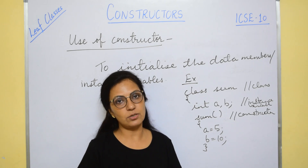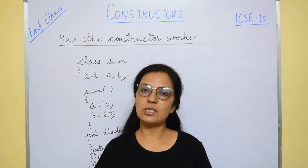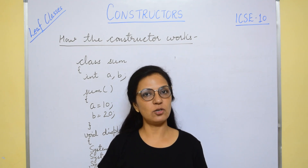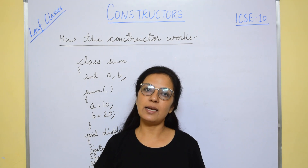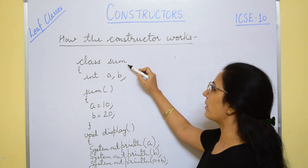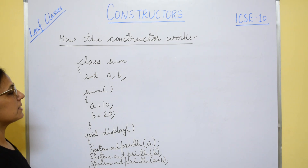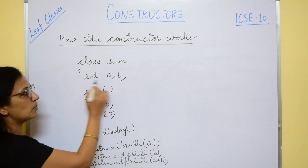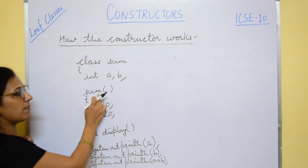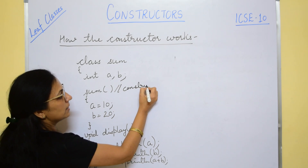Now let us see how this constructor works. As I told you, the constructor is used to initialize the data members. When we create the object of a class, the constructor is automatically executed and initializes the data members of the object. In this example, class name is 'sum' with two data members a and b of int type. The sum function has the same name as the class name and no return type, which indicates that this is a constructor.